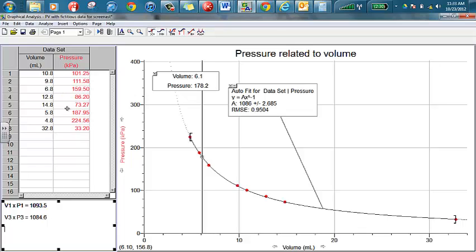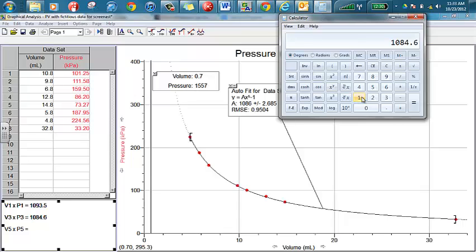Let me try another set of values, how about the fifth set of values, 14.8 and 73.27 for pressure and volume respectively. My fifth volume was 14.8 and I'm going to multiply that by 73.27, and that's 1084. I'll round that up to 1084.4.